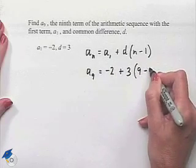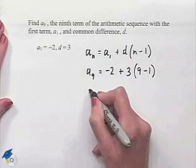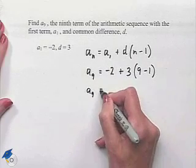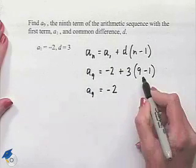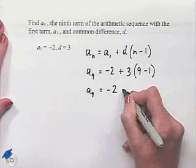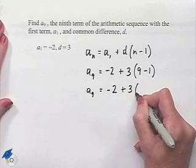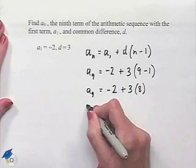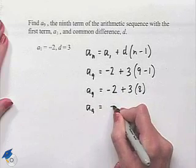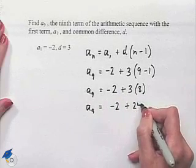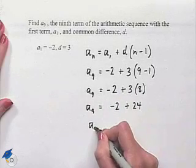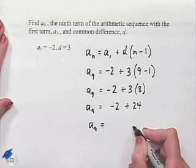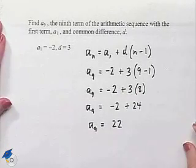Now we'll use order of operations to evaluate. We'll perform the subtraction inside the parentheses first. That will give us 3 times 8. Now we'll do the multiplication: -2 + 24. And finally, we'll take -2 and add 24 to it to give us our ninth term of 22.